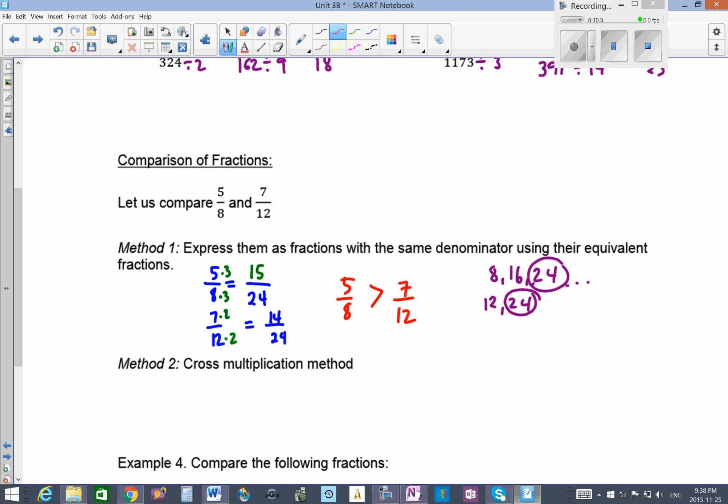Another method of comparing fractions is referred to as cross multiplication method. We have 5 over 8, set it up like this: 7 over 12. Then we cross multiply this numerator here with the denominator, and this denominator here with that numerator. So we're multiplying 5 and 12. 5 and 12 is 60. And 8 and 7 is 56.